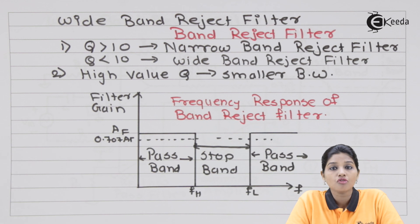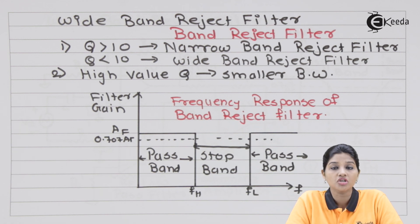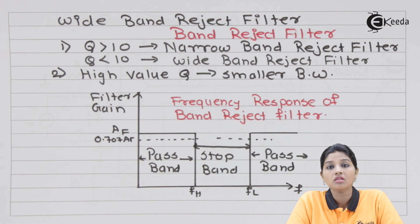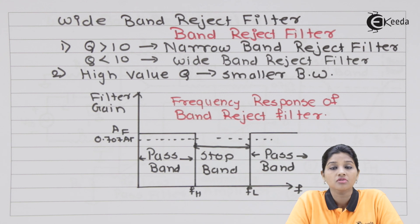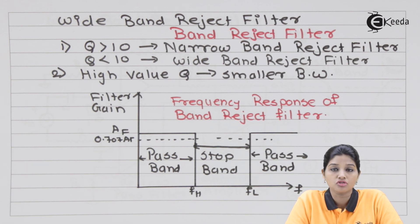In case of a band reject filter, as its name indicates, it rejects a particular band of frequency and passes all the frequencies beyond that. Therefore, in case of a band reject filter, there are two pass bands and one stop band.